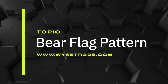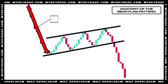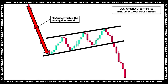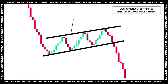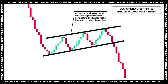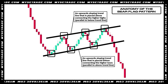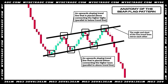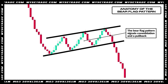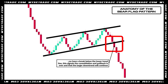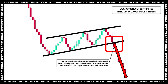Moving on to the bear flag pattern — here is the anatomy. You have your flag pull, which is the moving downtrend. You then have your bear flag pattern, which is an ascending channel. The bear flag pattern has two parallel upwards sloping trend lines placed above and below connecting the higher highs and higher lows. The angle and slant of the two trend lines mirror each other. The bear flag pattern signals consolidation and a pullback. Once you have a break below the lower trend line, this signals the consolidation and pullback is over and that the larger downtrend will continue.